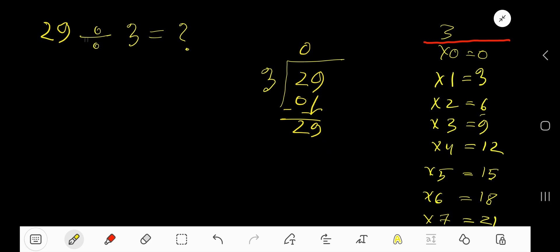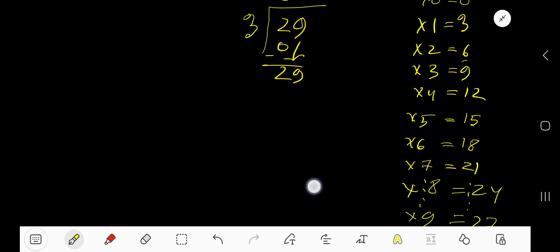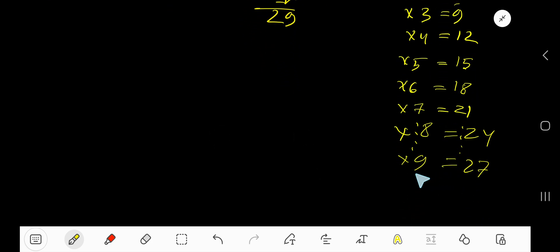Okay, look. 3 times 9 is 27. 3 times 10 is 27 plus 3, which is 30. 30 is greater than 29, so we need to stop here.